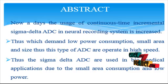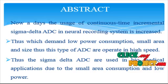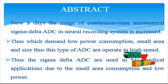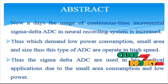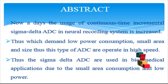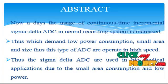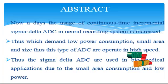In each step, the resolution requirement is significantly relaxed. To further enhance the power efficiency, a class AB output stage and dynamic summing comparator are used to implement the Sigma-Delta modulator. The prototype chip was designed and fabricated in a standard 0.18 micrometer CMOS process to validate the proposed ADC architecture.